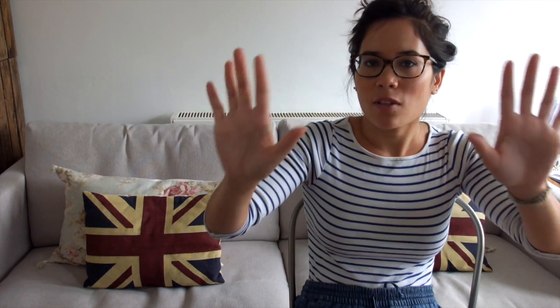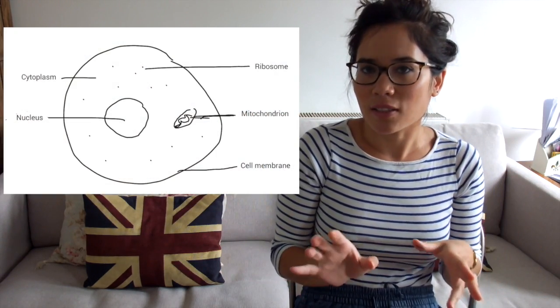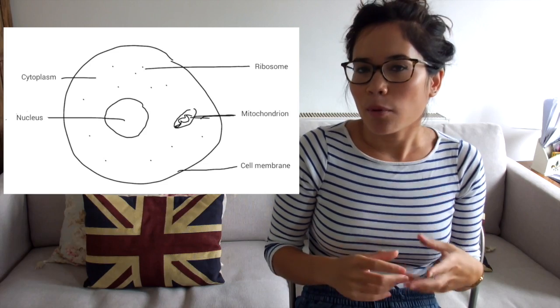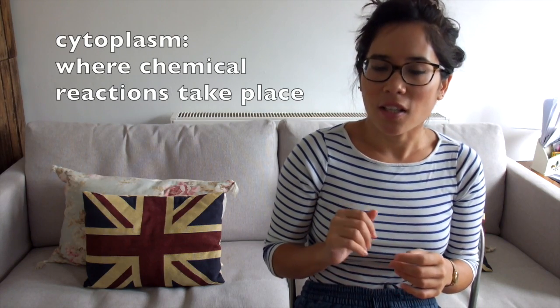Then you have some jelly which surrounds it, and we call that the cytoplasm. To help you remember that: 'cyto' means cell in biology and 'plasm' means jelly-like substance, so indeed it's the jelly of the cell. Its role is that it's where all the chemical reactions take place — so that's another key definition.